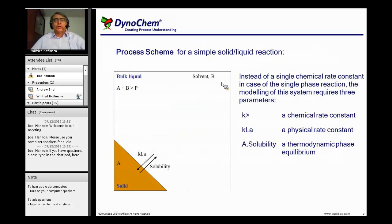By knowledge of a mass transfer rate, which is a physical rate constant, and the solubility. In the process scheme, this looks like we still have our liquid phase where the chemistry happens, displayed as a simple one-line chemistry, still described by a chemical rate law with the chemical reaction rate constant.